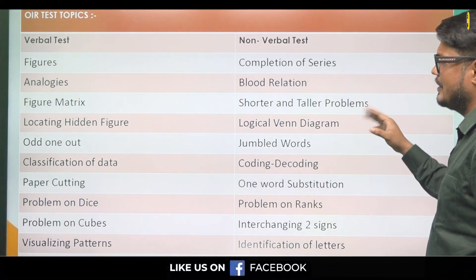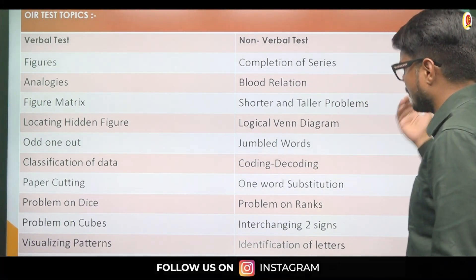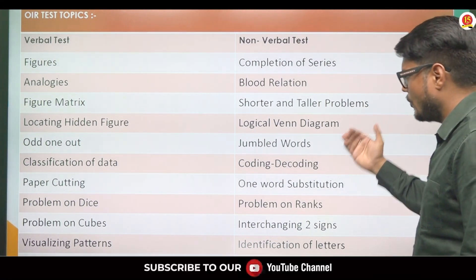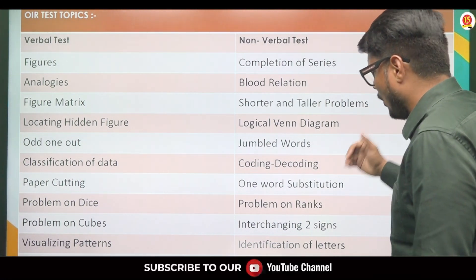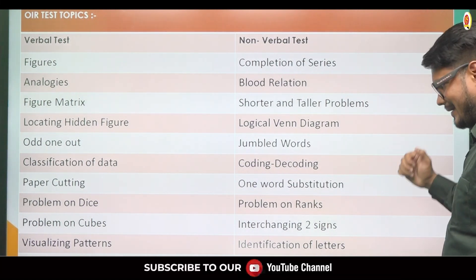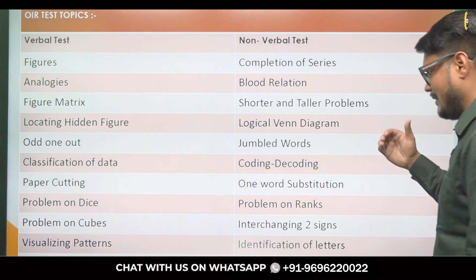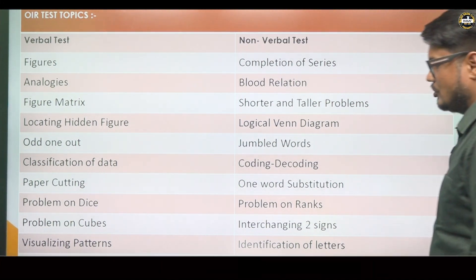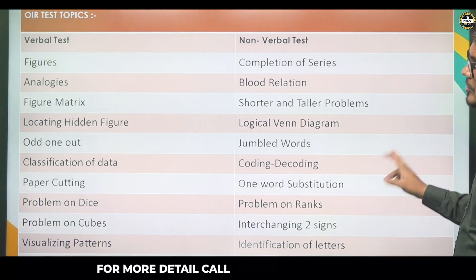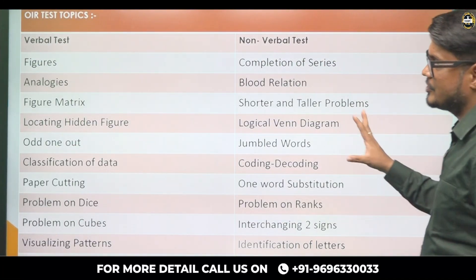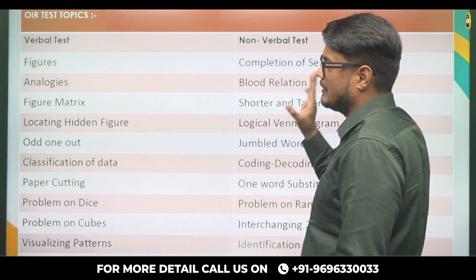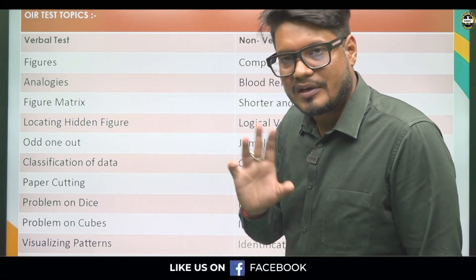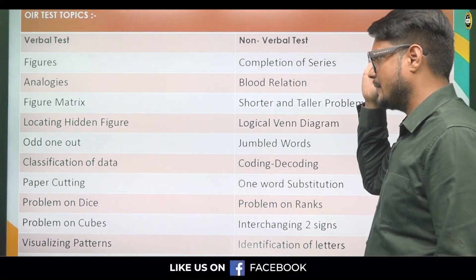For the non-verbal test, topics include: completion of series, blood relations, shorter and taller problems, logical Venn diagrams, jumbled words, coding-decoding, one-word substitution, problems on ranks, interchanging two signs, identification of letters, and reconstruction of sentences. These are the non-verbal topics that you will cover in the verbal and non-verbal testing during the SSB screening process.